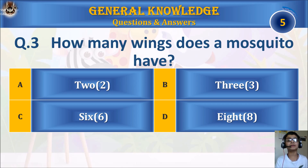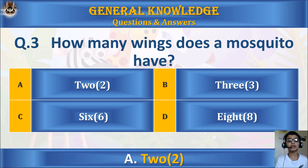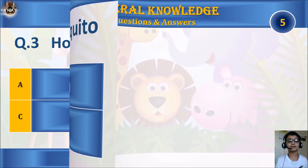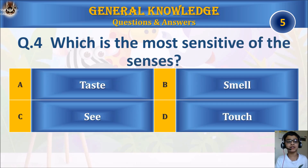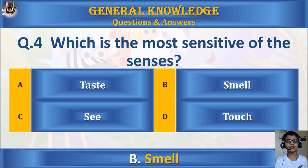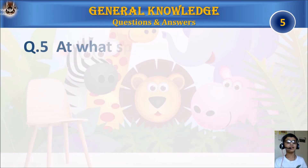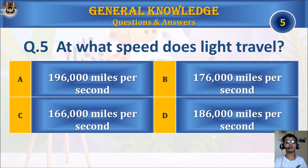Question 3: How many wings does a mosquito have? A: 2, B: 3, C: 6, or D: 8. Your time starts. The answer is A: 2. Question 4: Which is the most sensitive of the senses? A: Taste, B: Smell, C: Sight, or D: Touch. Your time starts.